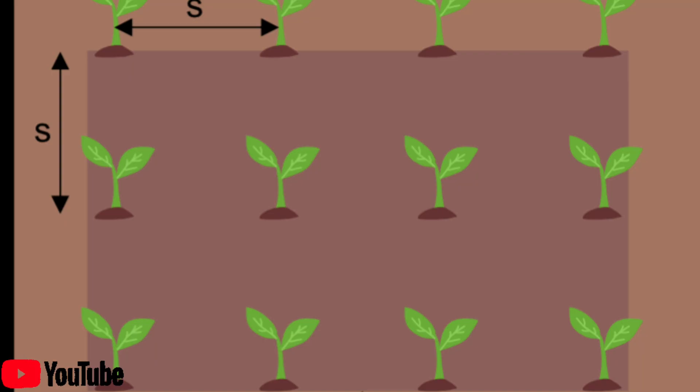Square system. A common system where trees are planted at each corner of a square. The space between the four trees can be used for short-lived filler trees. This system allows for intercropping and cultivation in two directions.